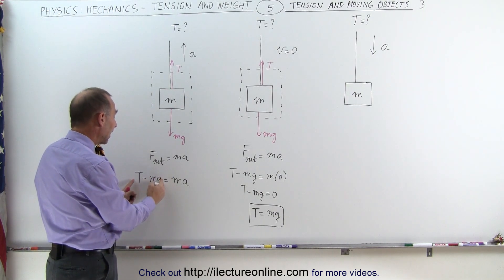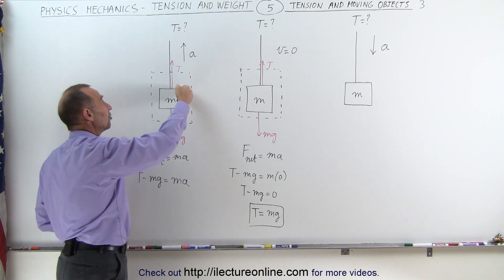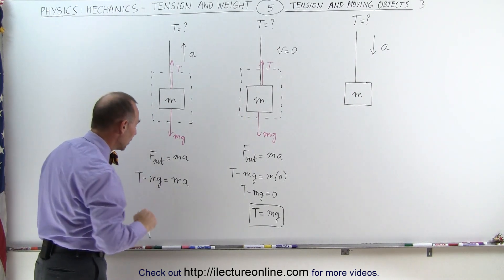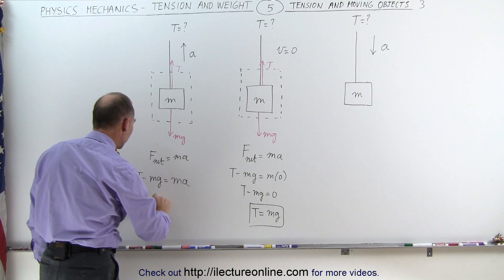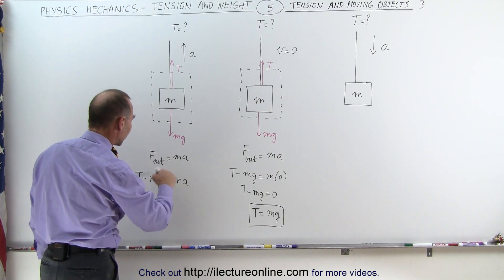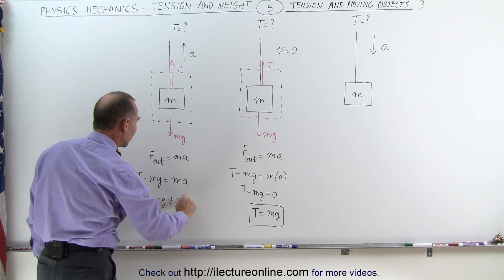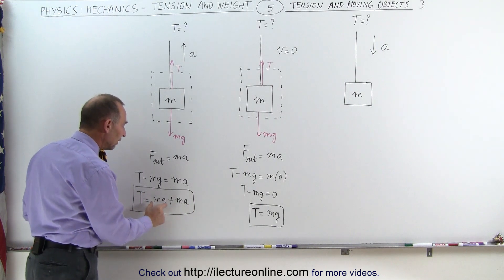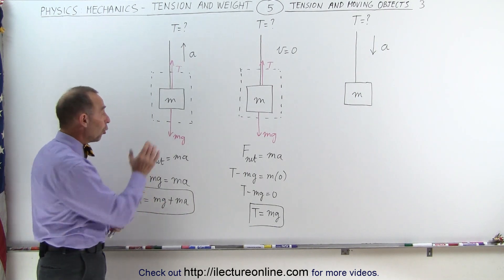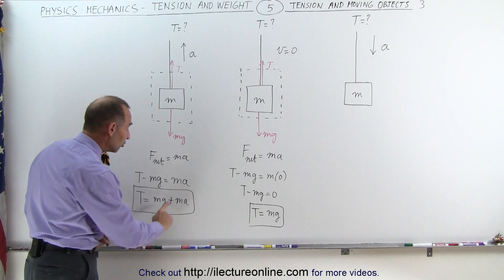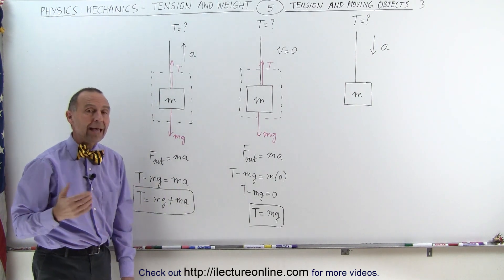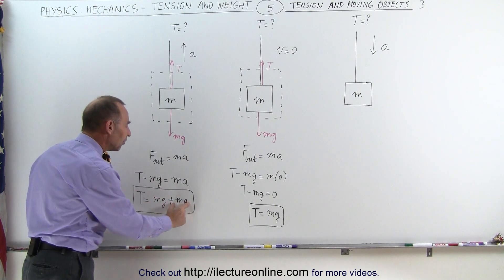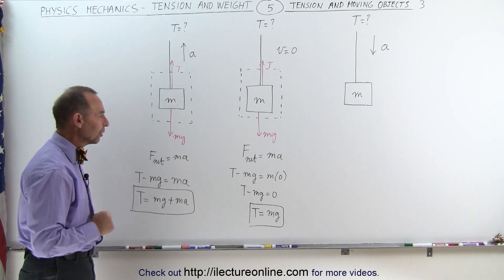Since the acceleration is in the upward direction, the tension must be greater than the weight of the object. The acceleration is a positive quantity, so T minus mg must also be positive. Bringing mg to the other side, the tension equals the weight plus ma. In other words, the tension equals the force required to hold the object against gravity, plus the additional force required to accelerate it at acceleration a.